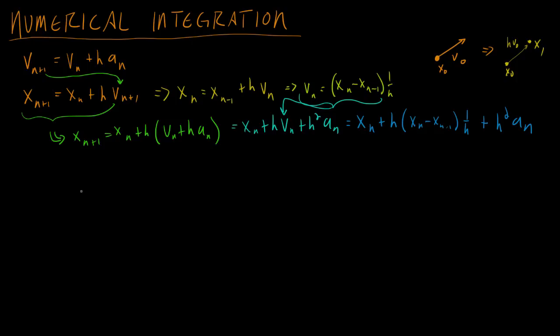And the last step is to simplify multiply. These h's cancel out. And we have two x_n's here so this will be two x_n minus x_n minus 1 plus h squared a_n.